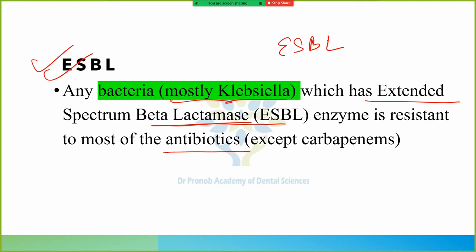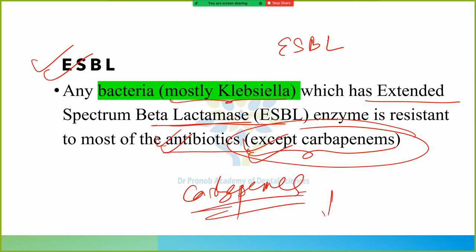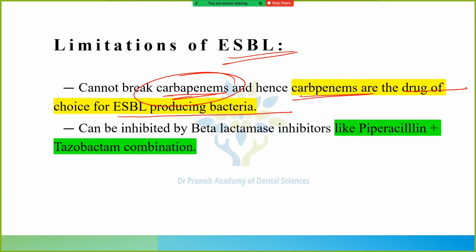ESBL-producing bacteria are resistant to maximum antibiotics, but they are not resistant to carbapenem — they fail in front of carbapenem. The limitation of extended spectrum beta-lactamase is that it cannot break carbapenem. So carbapenem is the drug of choice for extended spectrum beta-lactamase producing bacteria.